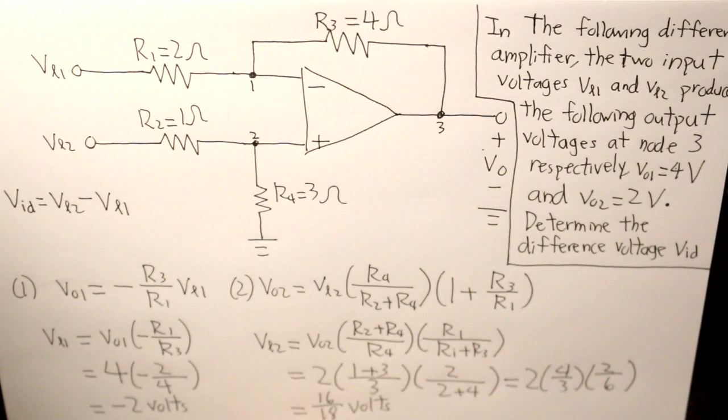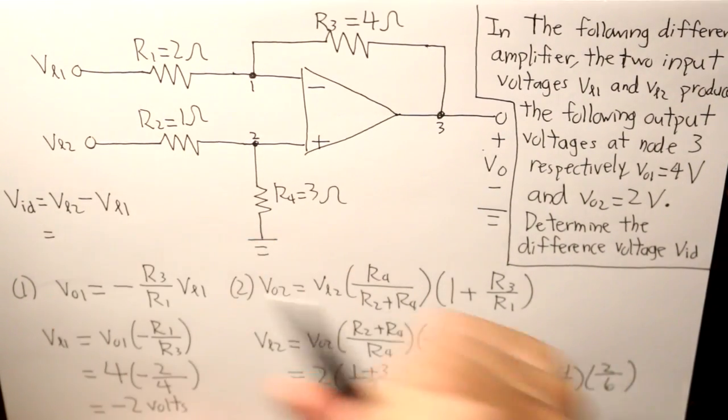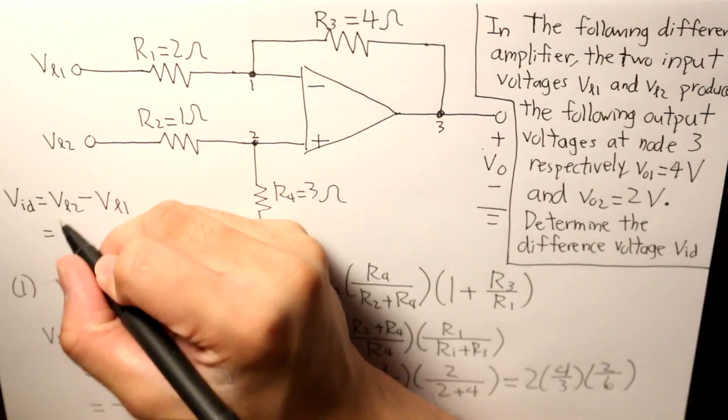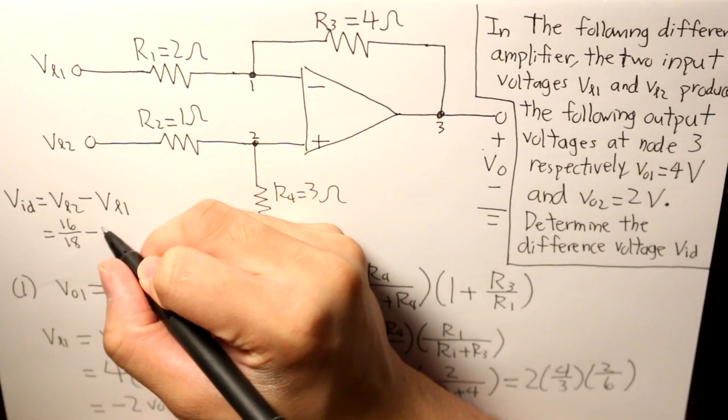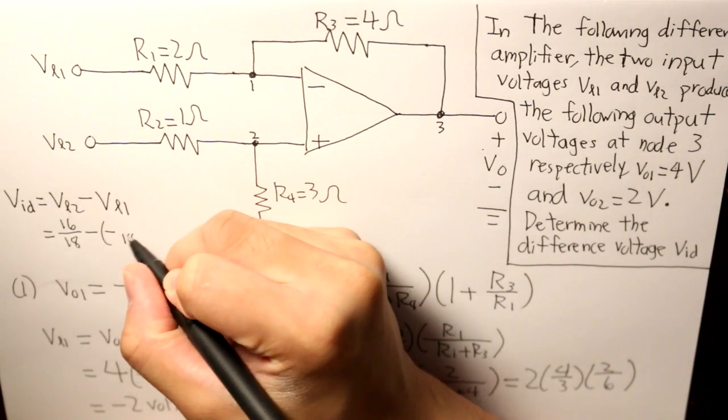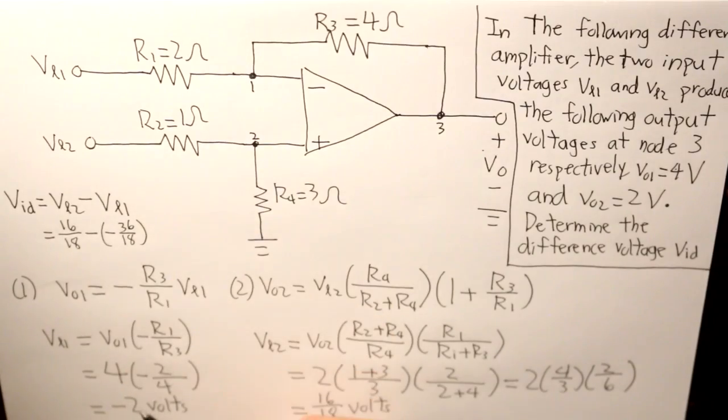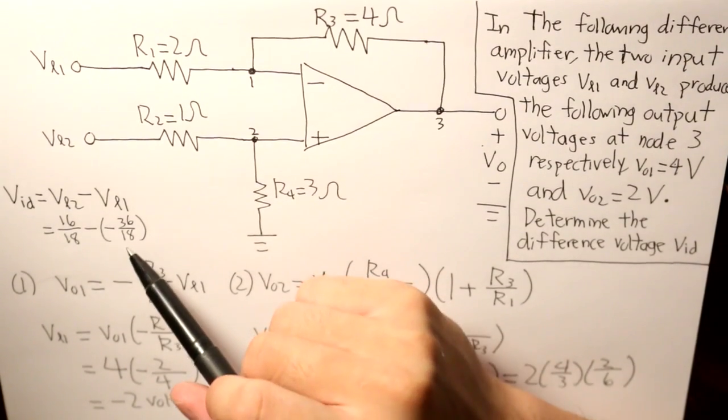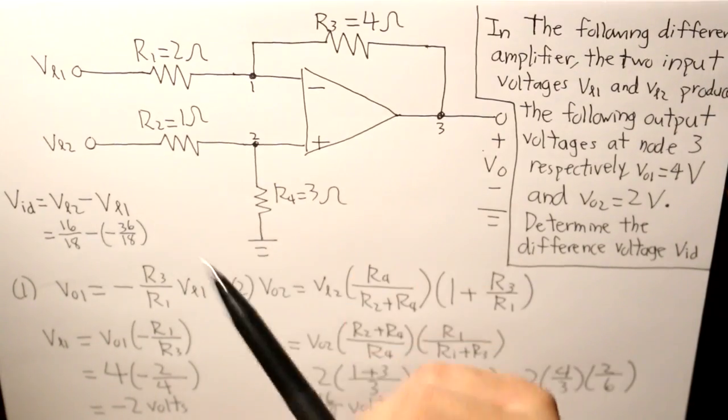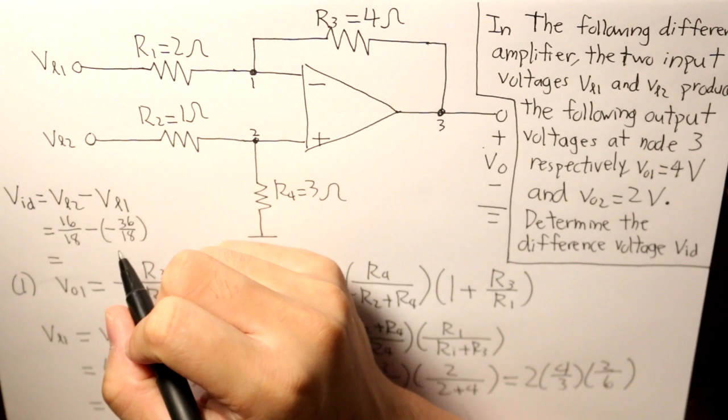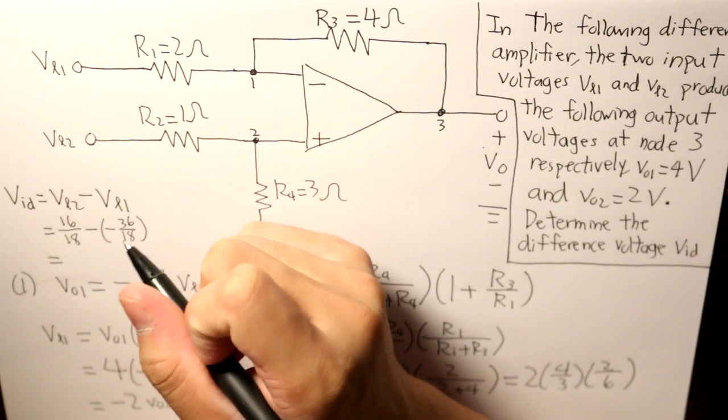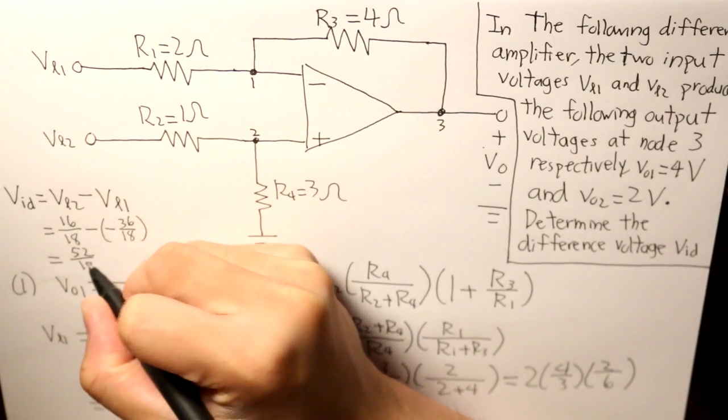So now what we do is we take the difference of that, and then we can find what our difference voltage is going to be. So, coming back up here, we get 16 over 18 subtracted by negative 36 over 18. I've converted the 2 volts into a fraction of a denominator of 18. And what we get is 52 over 18 volts.